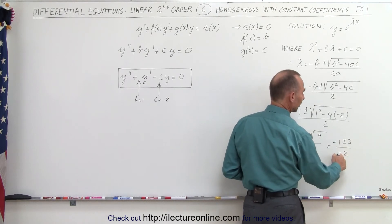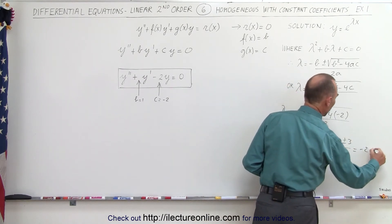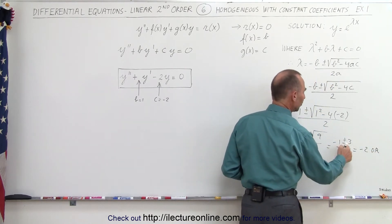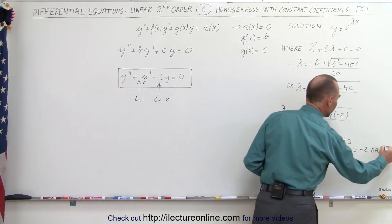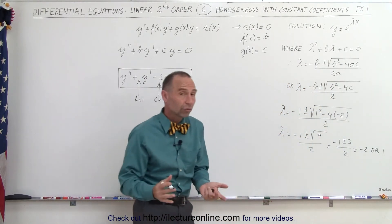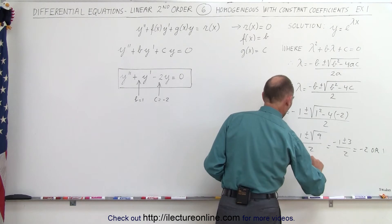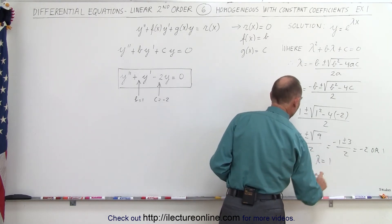So we have minus 1 minus 3, that's minus 4, divided by 2, that equals minus 2. Or, if I take minus 1 plus 3, that's plus 2, divided by 2, which is 1. So we have the two solutions for lambda. Lambda equals minus 2, or lambda equals 1.